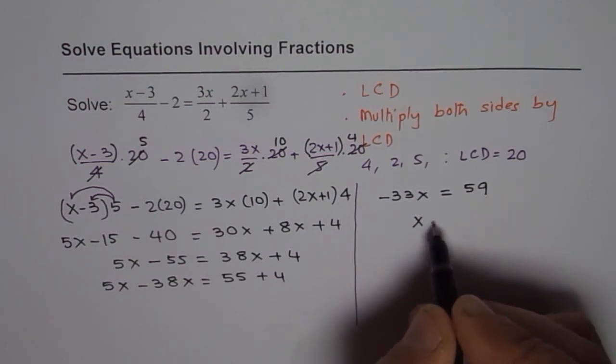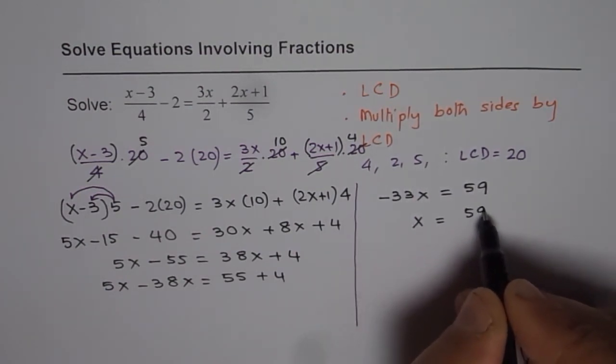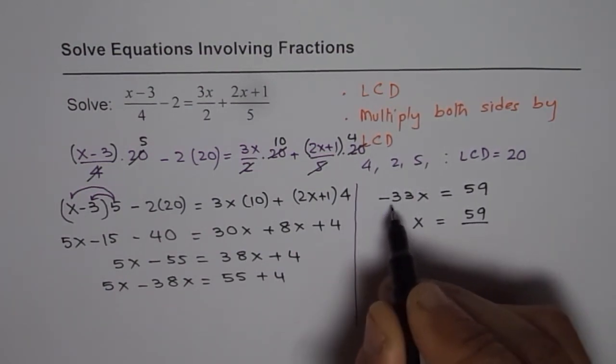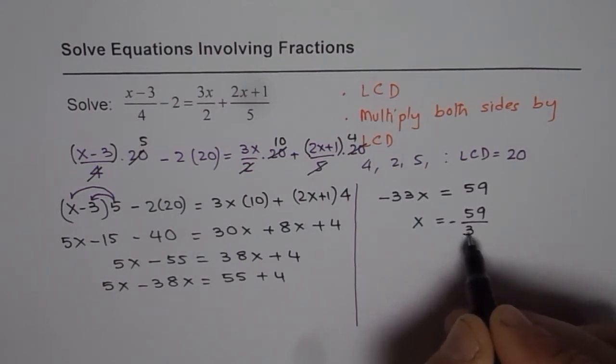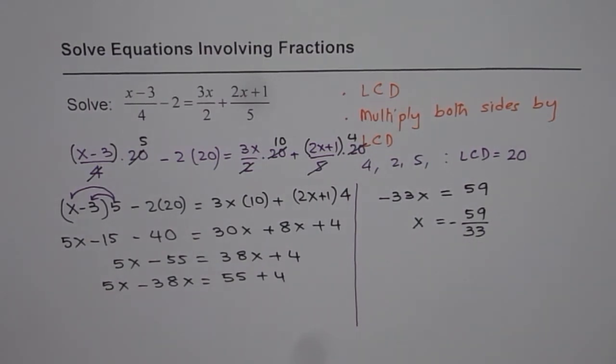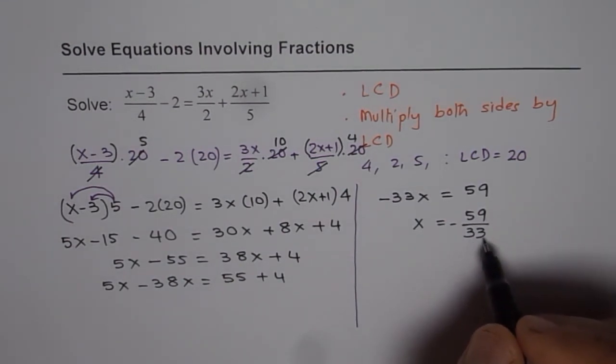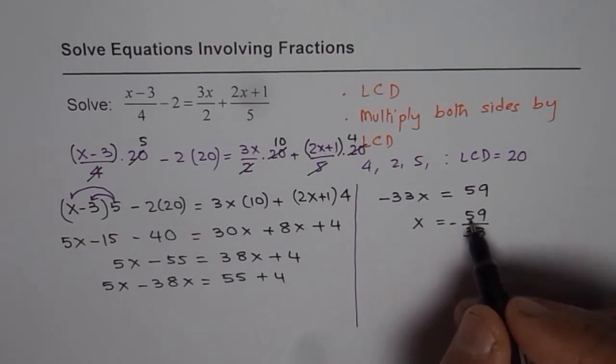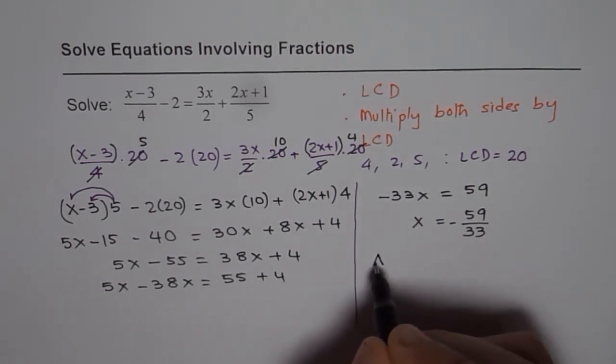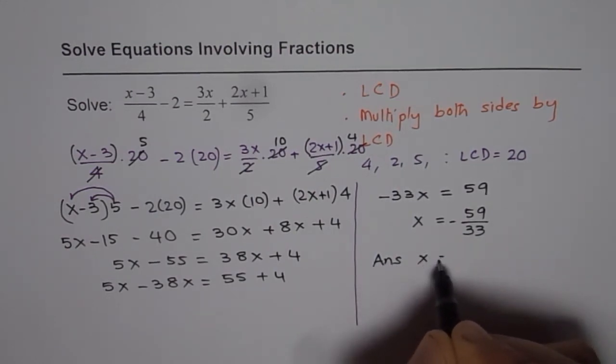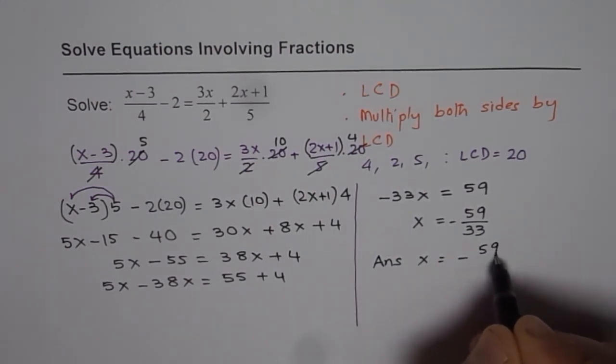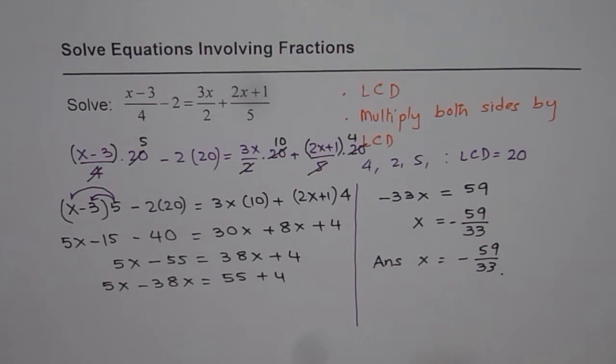So x equals 59 divided by minus 33. So that is the solution for x in this particular case. Now 59 is not a multiple of 3. You cannot further simplify. So we have our answer as x equals minus 59 over 33. So that is the answer.